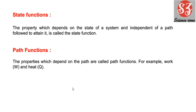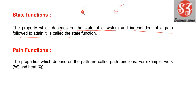Next है state function। यह वो property है जो depend करती है on state of system, और यह independent है from the path followed to attain that state — उसे कहेंगे state function। मतलब यदि आपका system एक state से दूसरे state में जाना है, तो सिर्फ दोनों states matter करेंगी। यह matter नहीं करता कि किस path से गए — वो सिर्फ और सिर्फ दो different states पर depend करता है, इसलिए इसे कहते हैं state function।